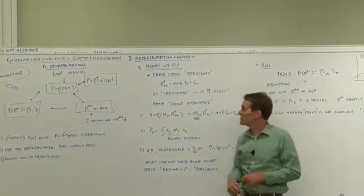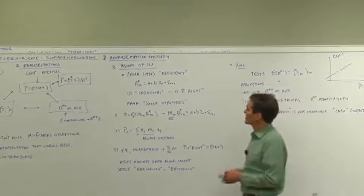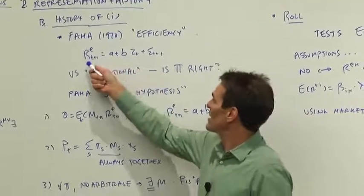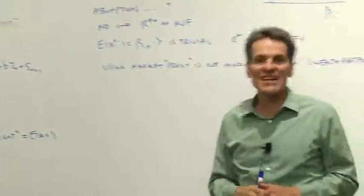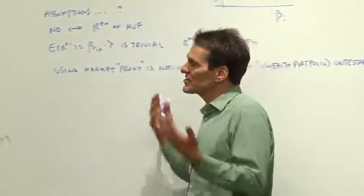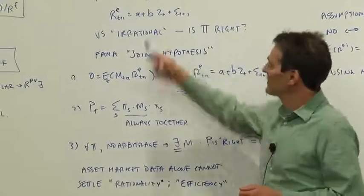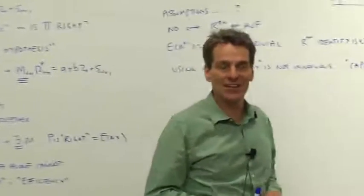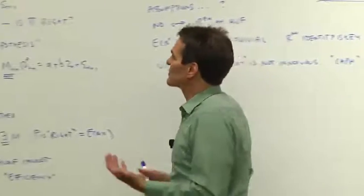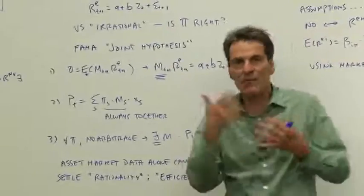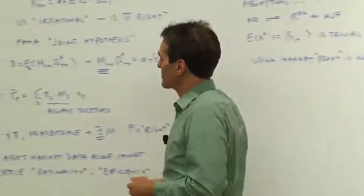Fama in 1970 introduced the concept of market efficiency and we studied that on the first day. For example, running regressions of returns on variables seen at time t to see if you can forecast returns. Those were tests of are markets efficient, do prices incorporate information. His early and continuing antagonists held no, no, no, markets are irrational. Now what does irrational mean? Irrational must mean that the probabilities are wrong. People don't assess probabilities right so markets don't forecast things right.